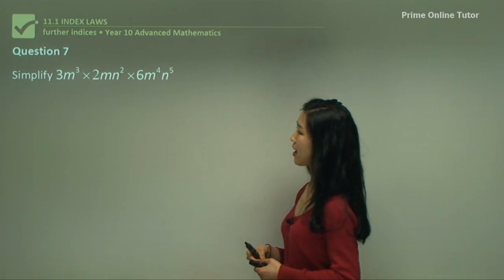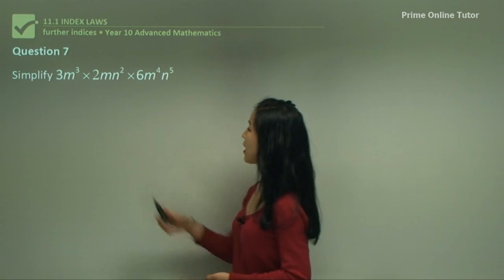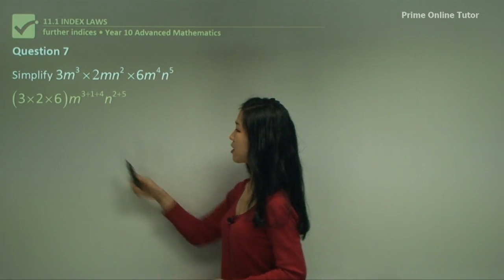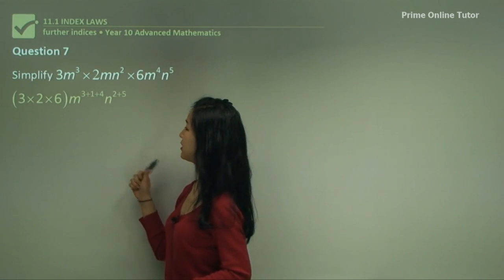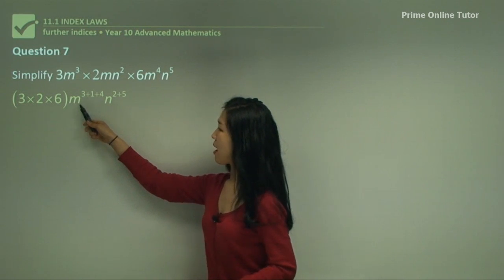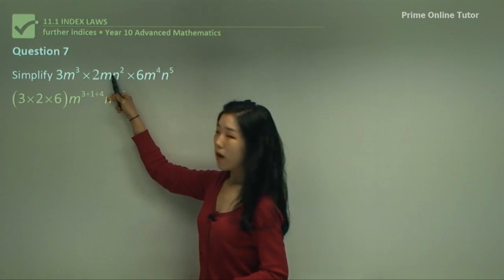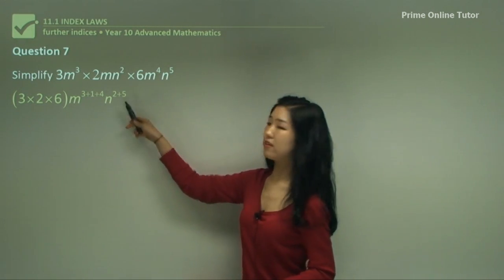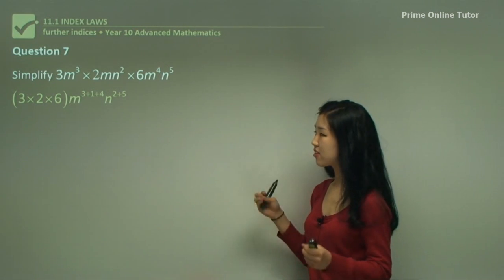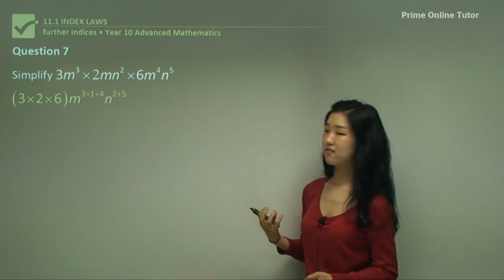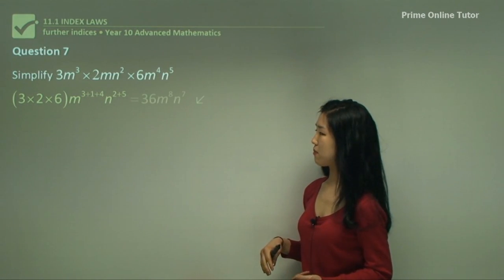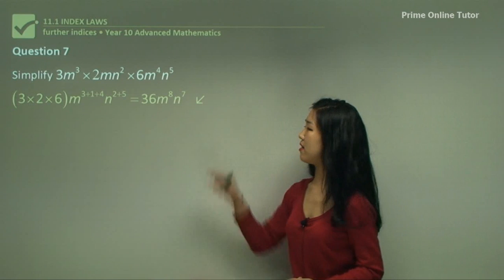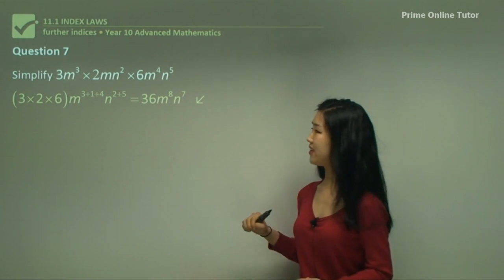Question seven. We have bases m and n with different coefficients. We multiply the coefficients together and put them in front. Then m has a power of 3 plus 1 plus 4, and n has a power of 2 plus 5. As long as you can match the base terms together, there's no big problem. So 3 times 2 times 6 is 36 — that's our answer for question seven.